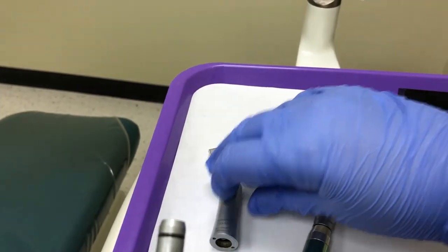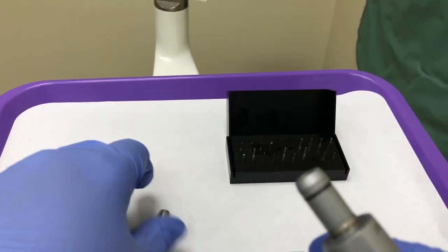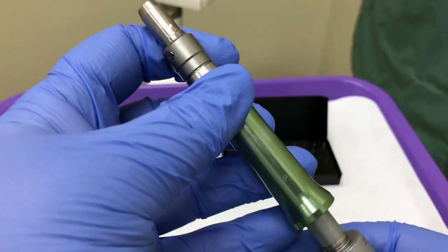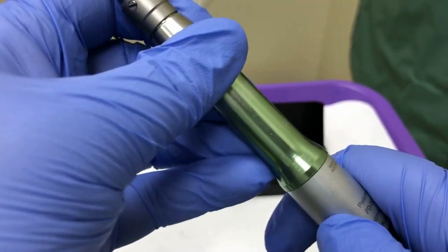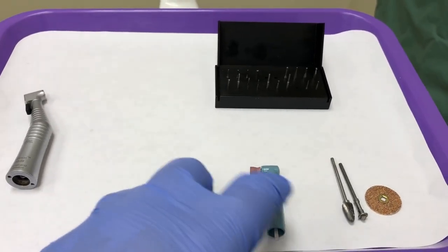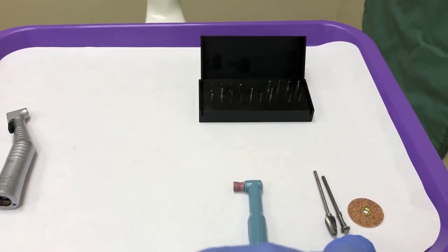The next example shows the straight attachment being attached to the low-speed motor. Several items may be attached to the low-speed motor with a straight attachment, such as the prophy angle, the laboratory burr, or the mandrel and disc.